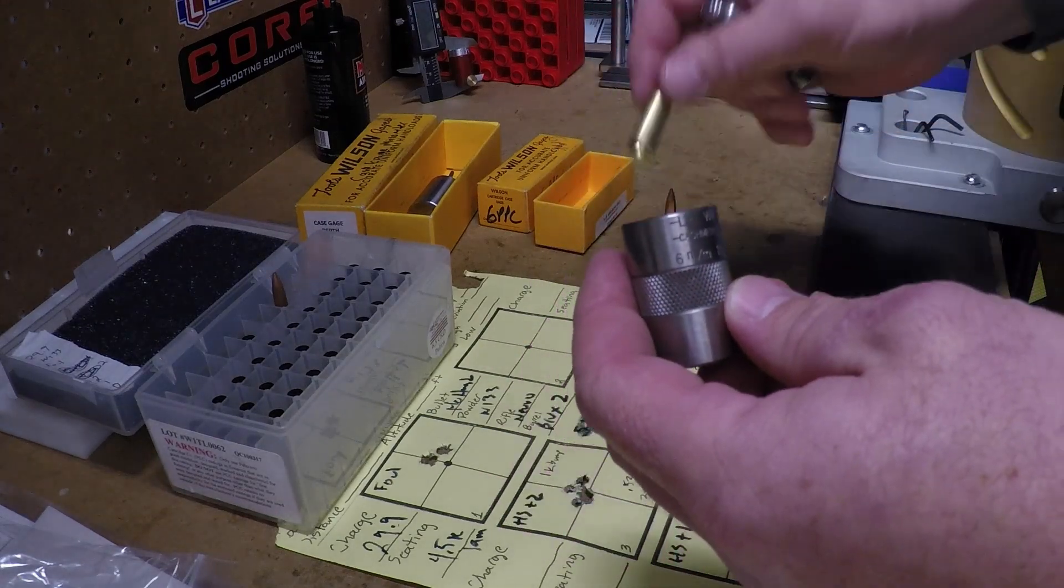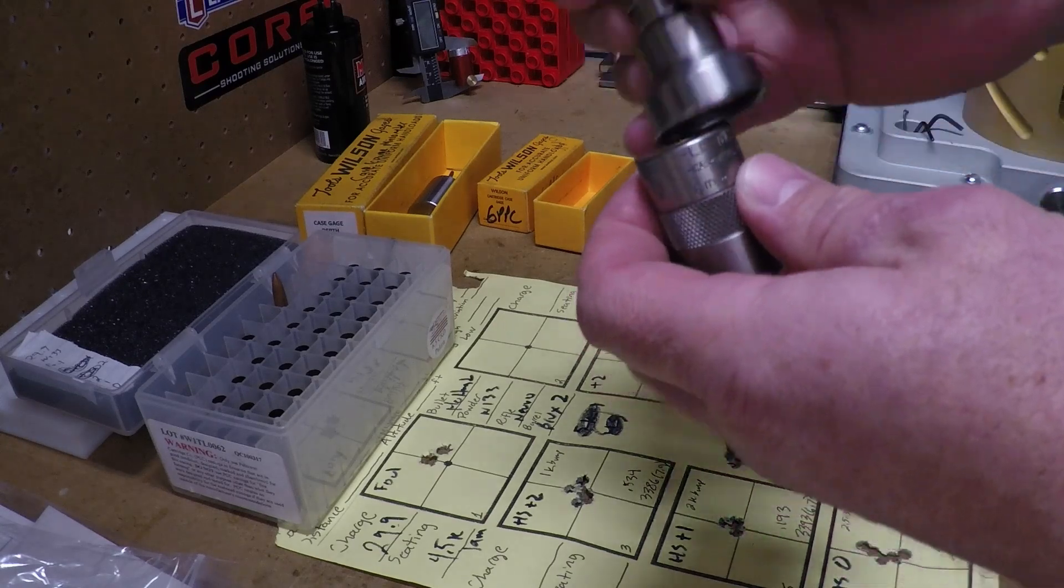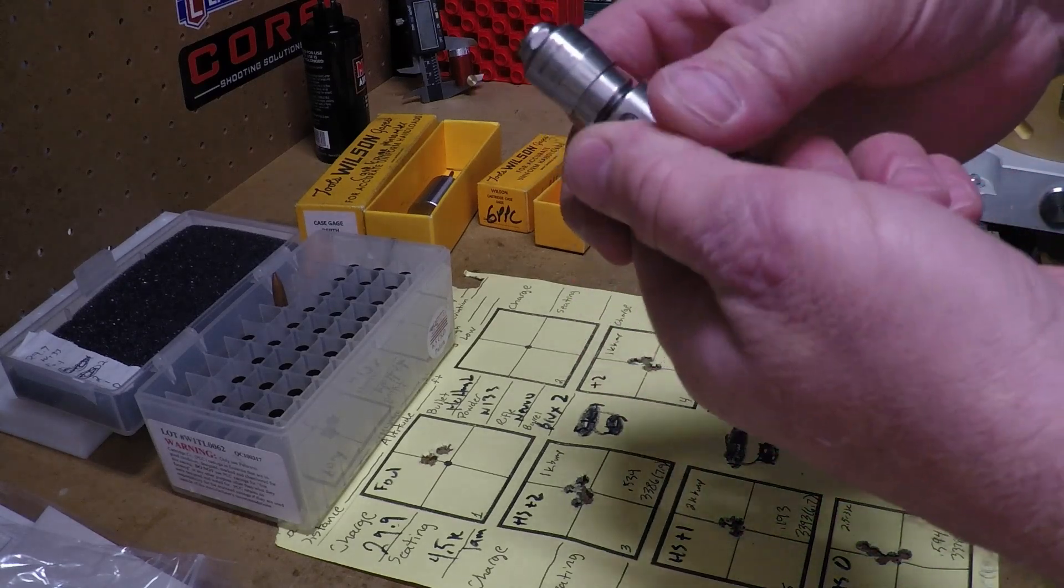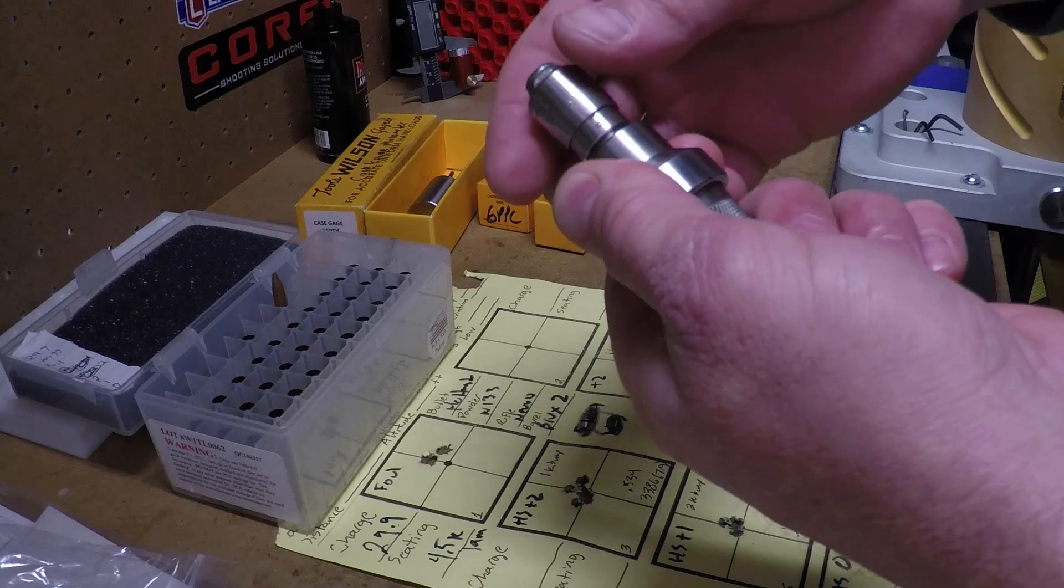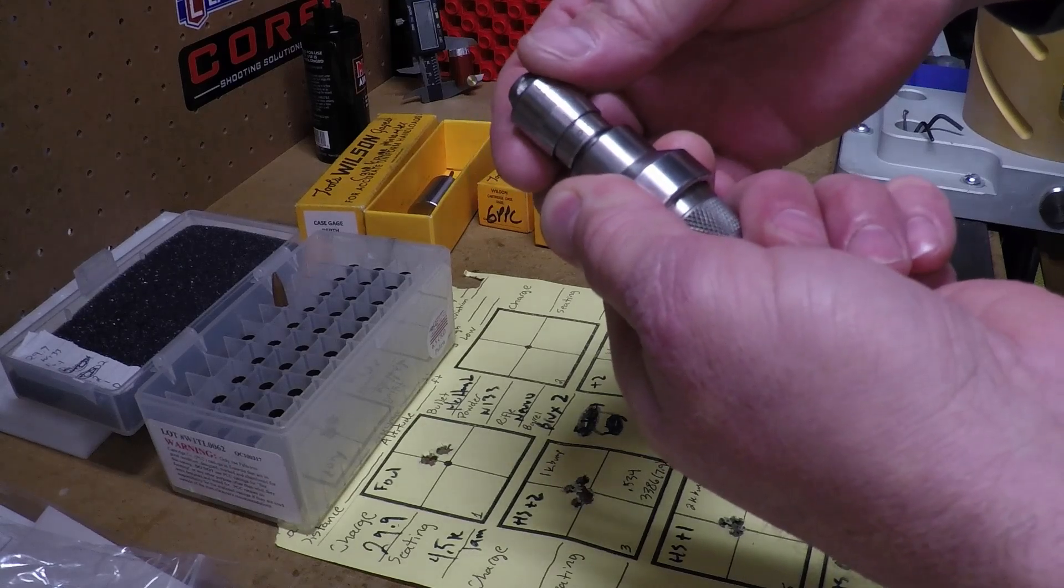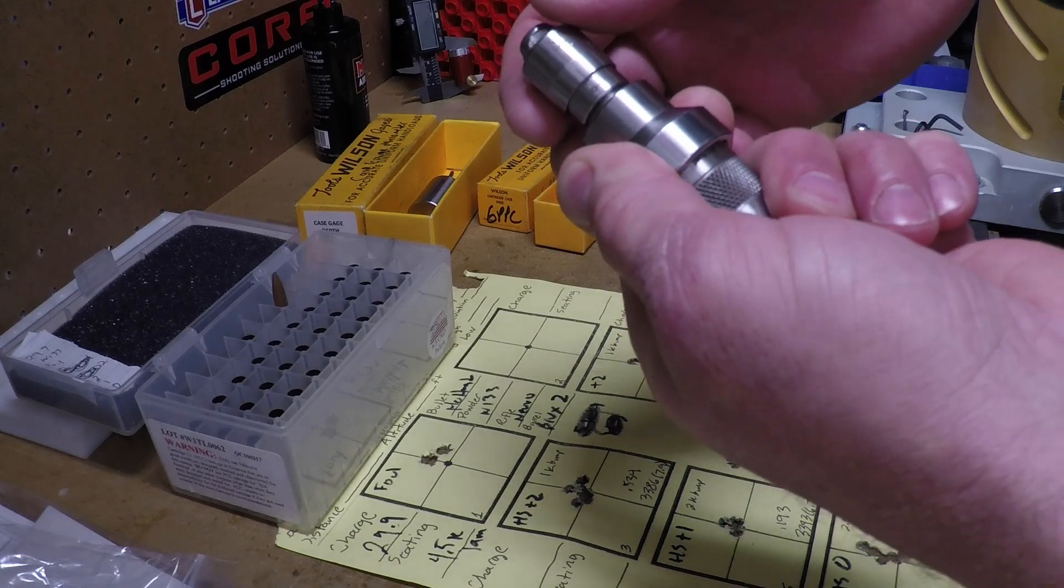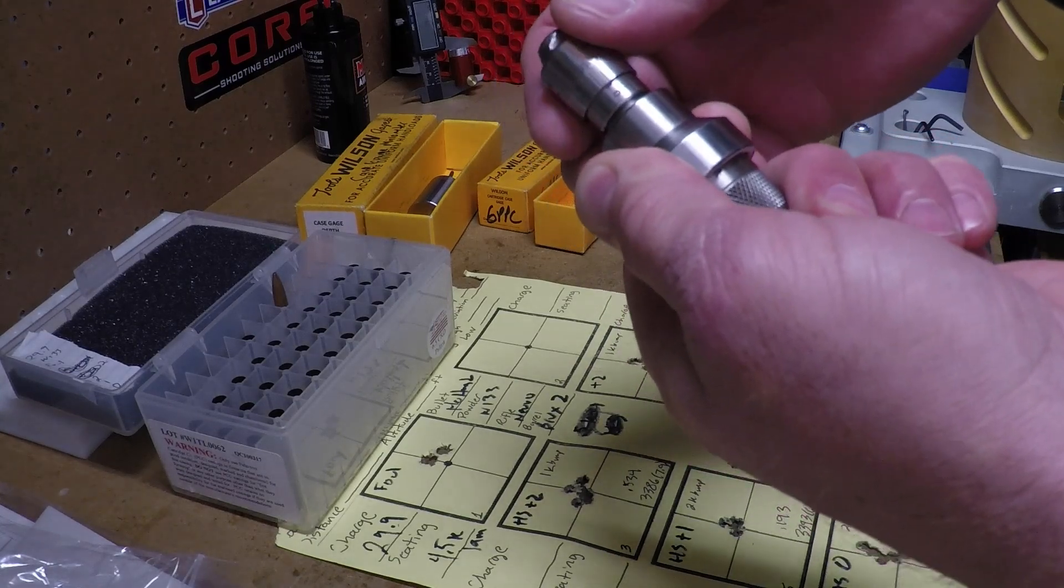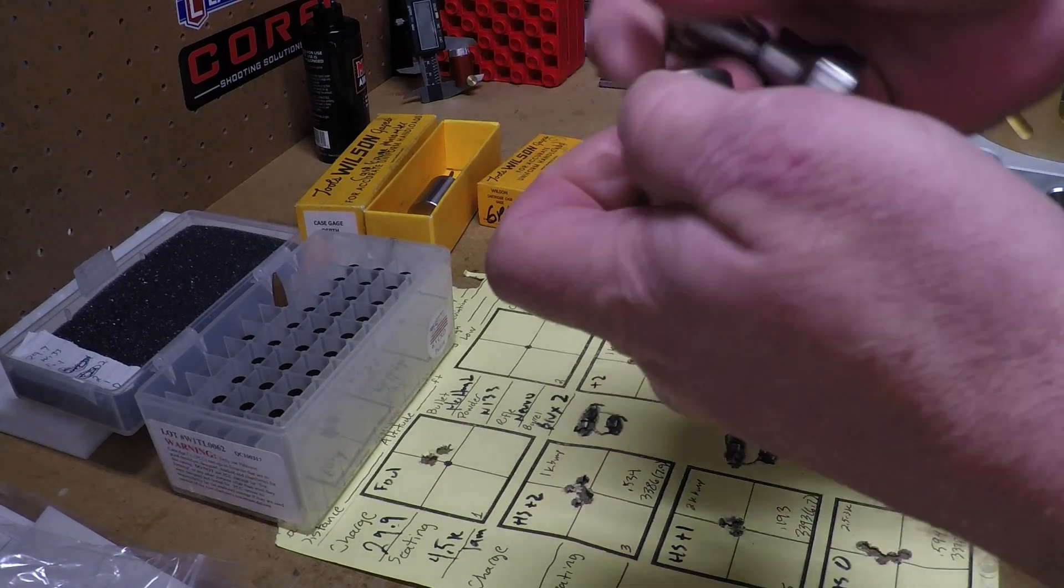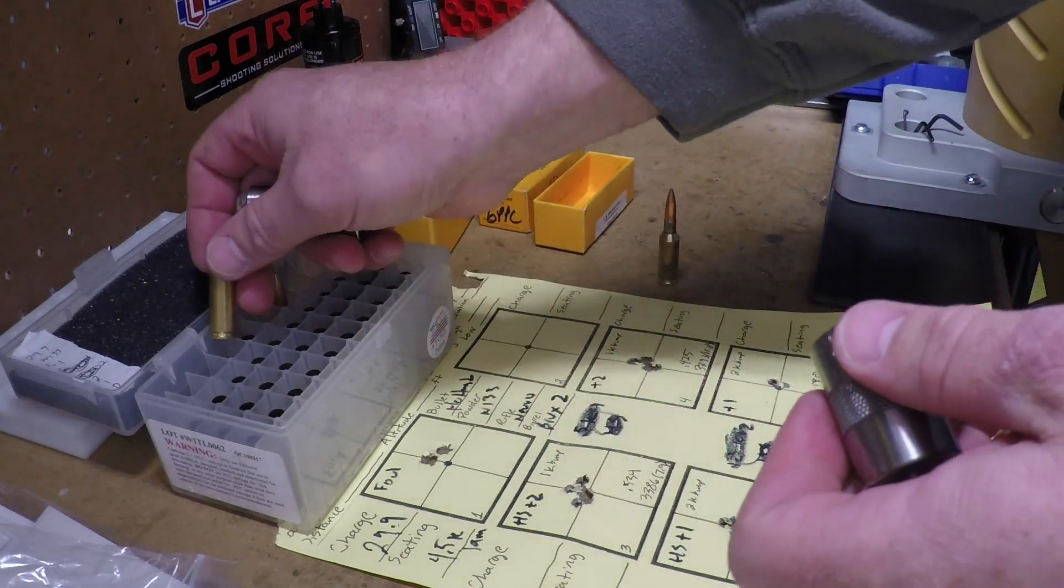So for example, a fired piece of brass, just throw it in there, put the case gauge over it, find your zero, and then turn it down. Looks here a fired case is about three thousandths, three thousandths above zero. That gives you that reading.